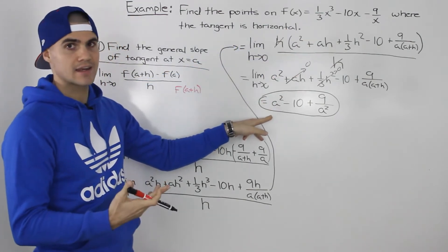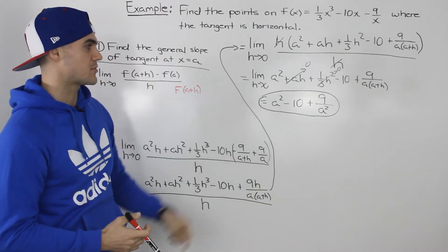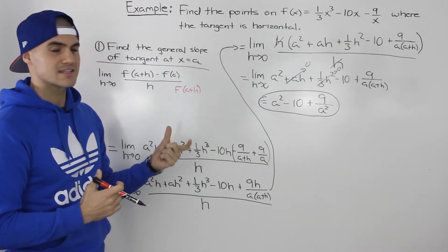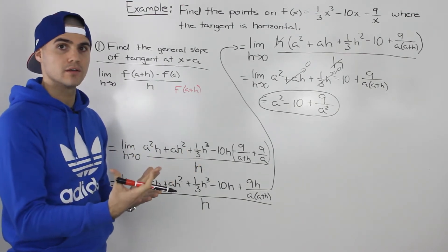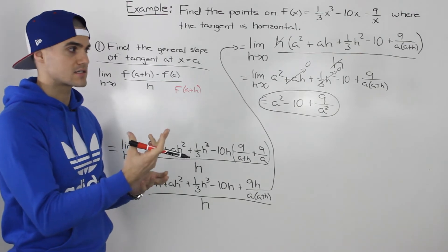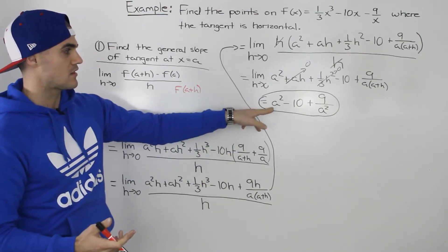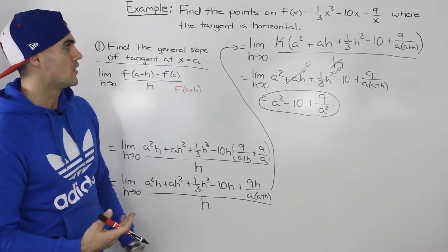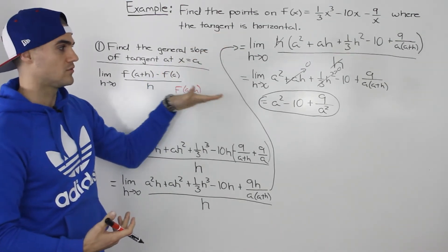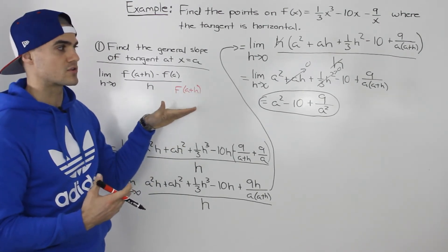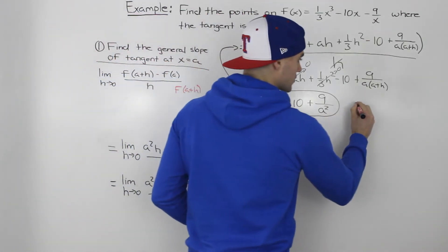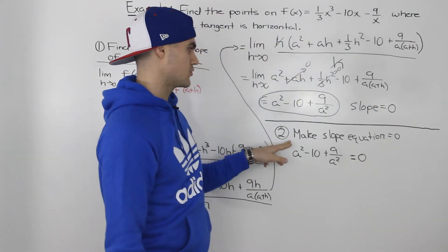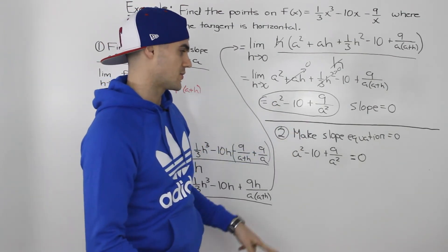We can find the slope of the tangent at any value of a by plugging it into that expression. But they're asking for the points where the tangent is horizontal — so we need to find what a values produce that condition. We take the slope equation and set it equal to 0, because the slope of a horizontal line is 0, and then solve for a.